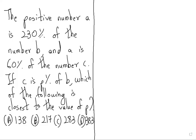The positive number A is 230% of the number B, and A is 60% of the number C. If C is P percent of B, which of the following is closest to the value of P?